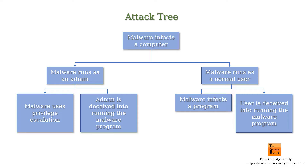The child nodes indicate some conditions, and if the conditions are satisfied then the parent node is satisfied. In this way, we can view an attack tree bottom up and then decide whether the root node can be satisfied. If the root node is satisfied then a successful cyber attack is possible.